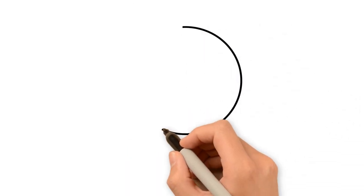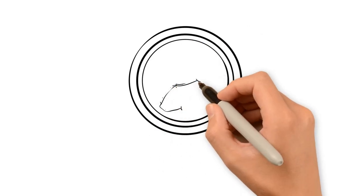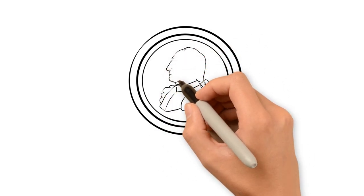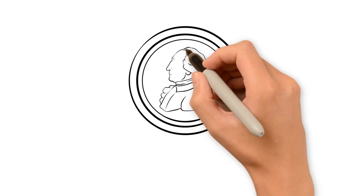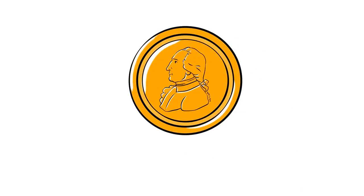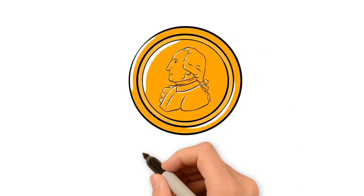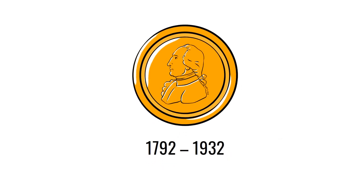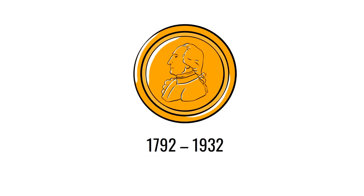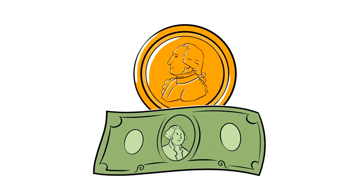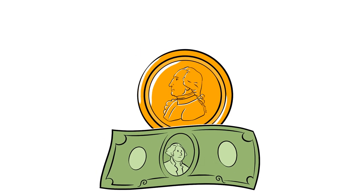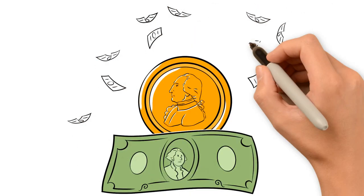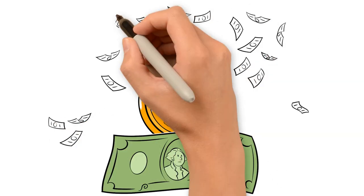Another consequence of this has been normalizing consistent inflation. From 1792 to 1932, an ounce of gold consistently cost roughly $20. Between the period of FDR closing the gold window in the US and Nixon doing so internationally, the price rose from $32 to $45. In 2021, an ounce of gold cost over $1,800.